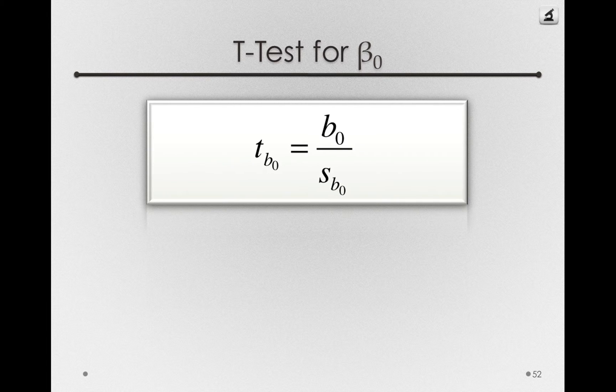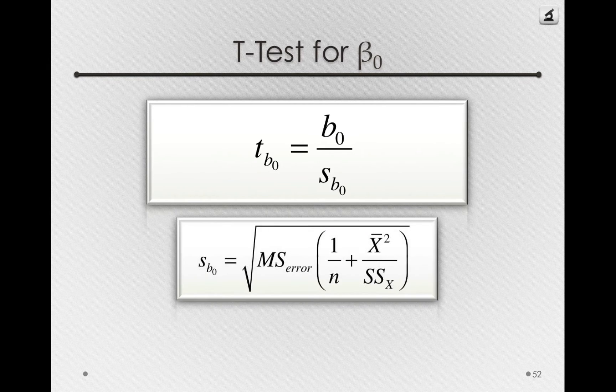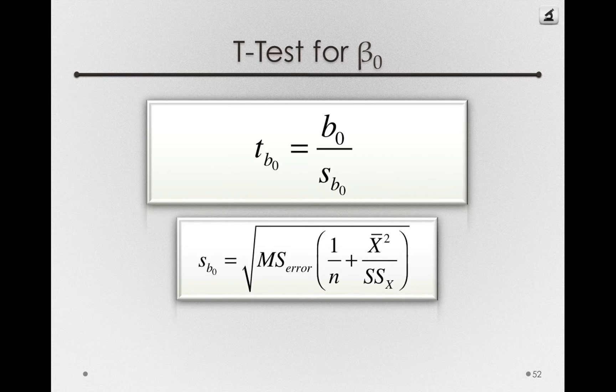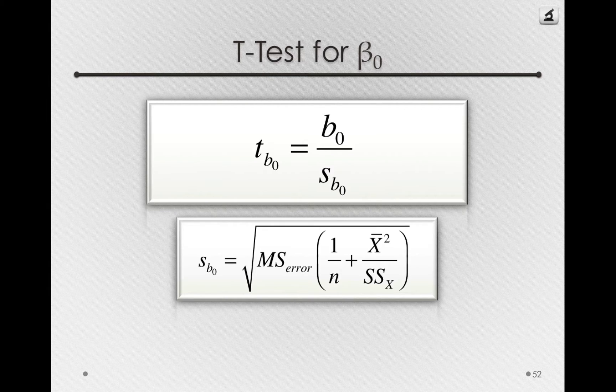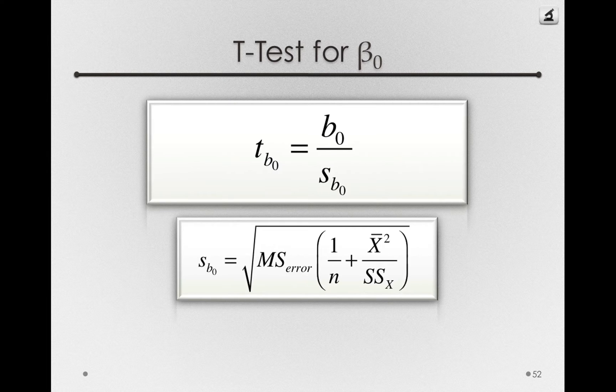Like I did for the t-test for beta 1, I want to show you the estimated standard error in this formula. Don't worry too much about each component. We'll actually look through it more completely in just a second. But notice that it has more pieces to it. And in fact, this reveals something about the estimate of beta 0. That more things can go wrong when we're estimating beta 0. So in fact, there tends to be more error in estimating that parameter.